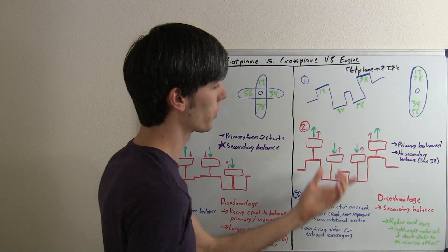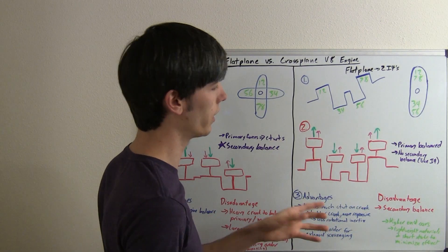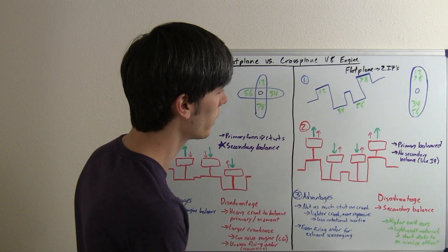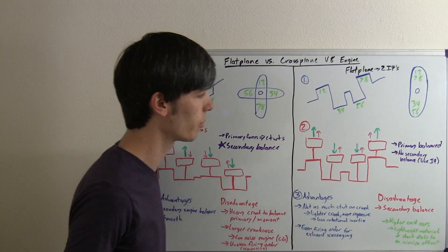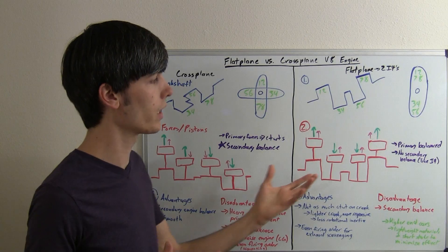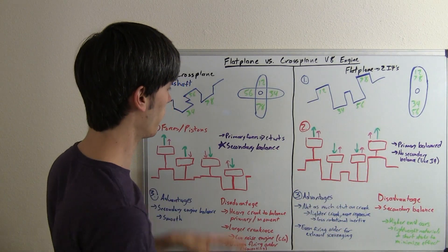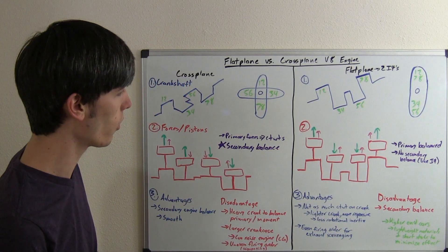you know that the primary forces are going to balance out, but the secondary forces aren't. So an engine, a flat-plane V8, is going to have a secondary engine imbalance, and so there's going to be vibration because of that, and that's why this is sometimes preferred over it.